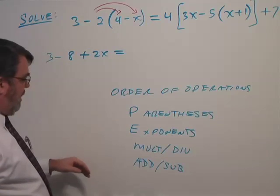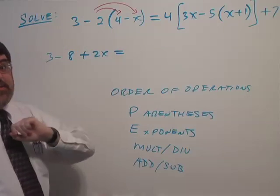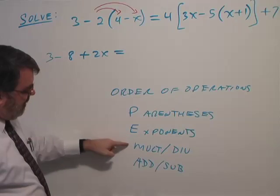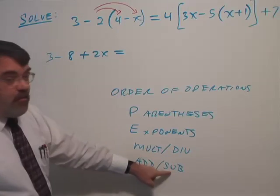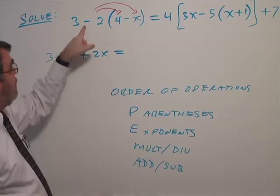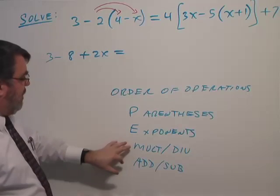I put all this up here partly to show you why we didn't subtract 3 minus 2, because the order of operations says we should multiply before we subtract. I need to multiply the 2 through the parenthesis before I subtract from 3. That's why we did that.